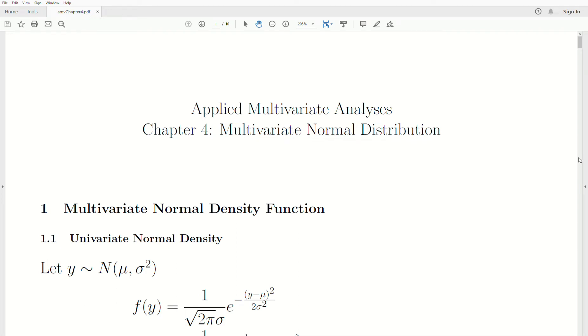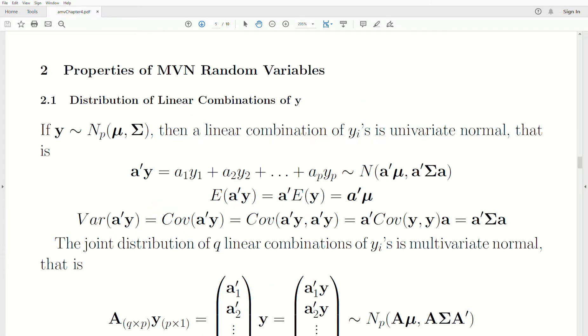Hello, this is the next video in a playlist that I'm calling Applied Multivariate Analysis. We're in Chapter 4, which I'm calling the Multivariate Normal Distribution. Let's jump into today's topics, which are properties of the multivariate normal random variables. We're going to look at the first section, which is Distribution of Linear Combinations of Y.